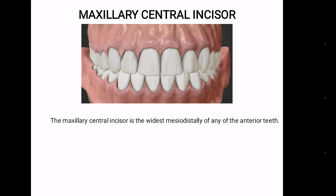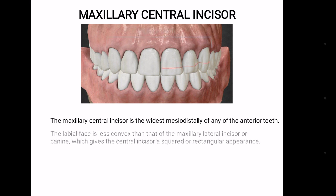The maxillary central incisor is the widest mesiodistally of any of the anterior teeth. The labial face is more convex than that of the maxillary lateral incisor or canine, which gives the central incisor a square or rectangular appearance.